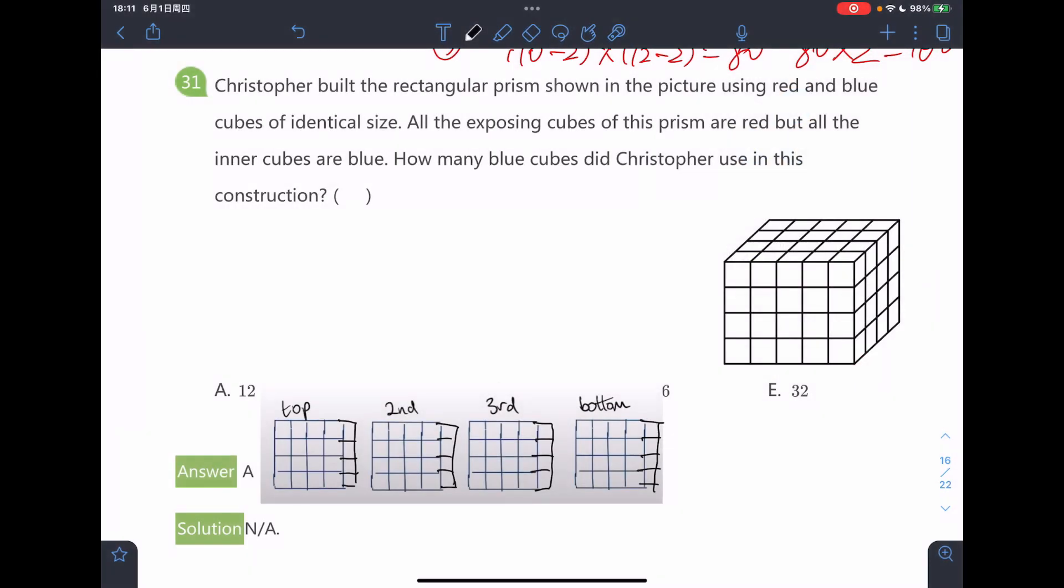We can exclude the top layer and the bottom layer because all of the cubes at the top layer and bottom layer will be painted red. All of the cubes at the top layer and bottom layer are exposing, so we can exclude all of them.